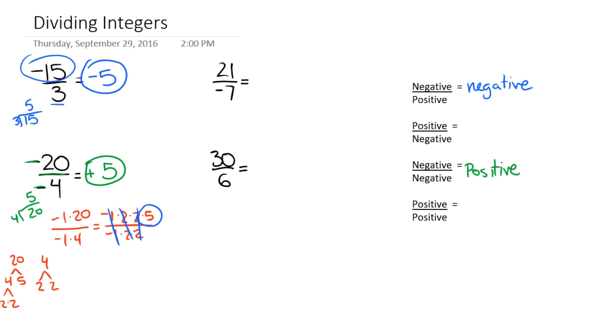Alright, our next example here is 21 divided by negative 7. So if we take 21 and we divide by 7, we get 3. And since we have a positive divided by a negative, we have an odd number of negatives in this problem, we have our solution of negative 3. So this says a positive divided by a negative is a negative.